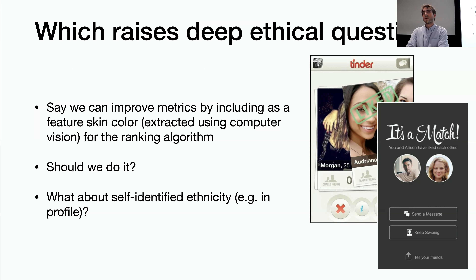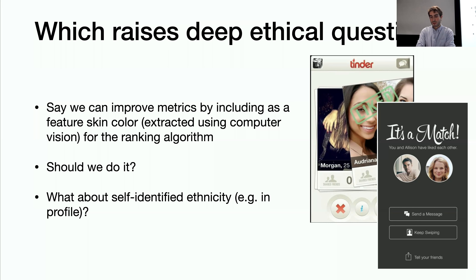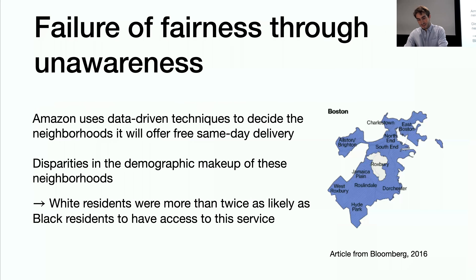Even simple collaborative filtering applications, when applied in real life to people, start to raise very important ethical questions — which data you will use, and how you will use it. You might think the problem is simple: just don't use skin color features and your algorithm will be fair. But what we really see is that the problem is much deeper and more complicated. This is what we call the failure of fairness through unawareness.